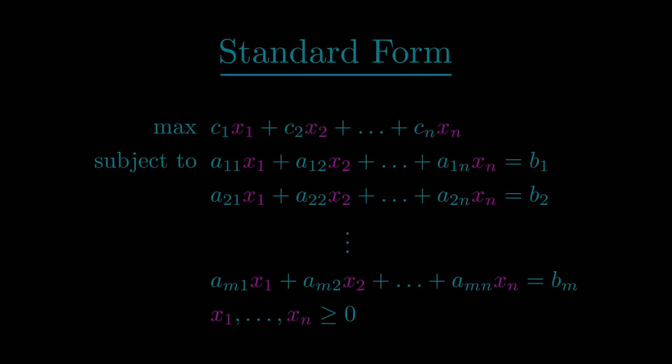To perform simplex, we first need to translate the linear program into something called standard form. Here, x1 to xn are our decision variables, which we'll color in purple. The rest are constants.